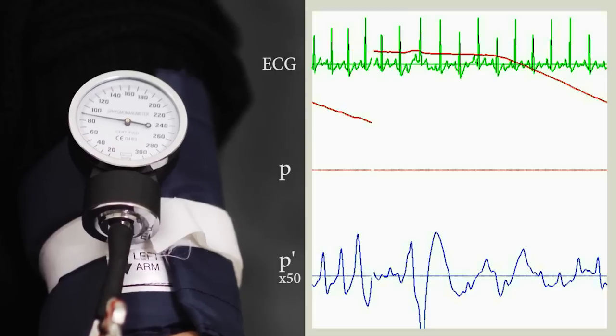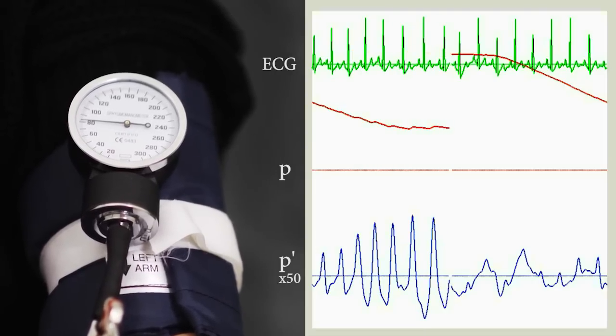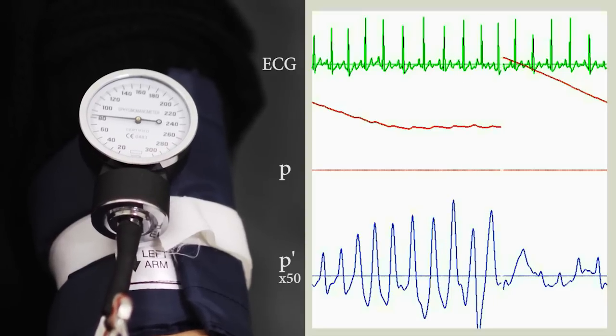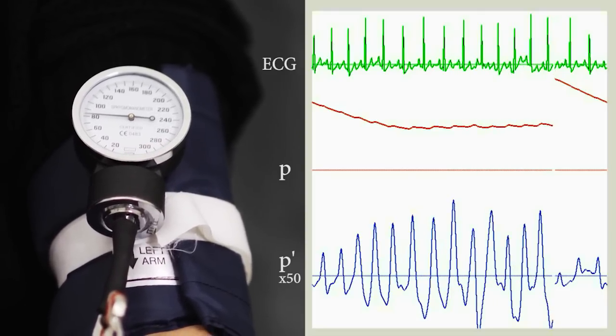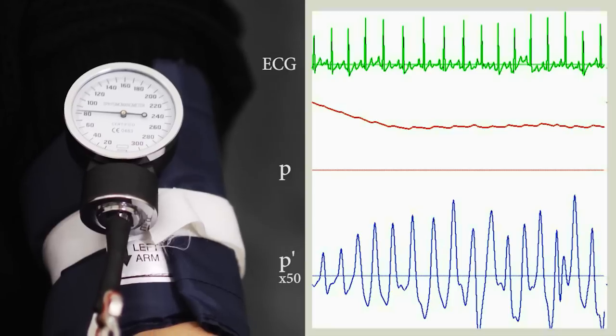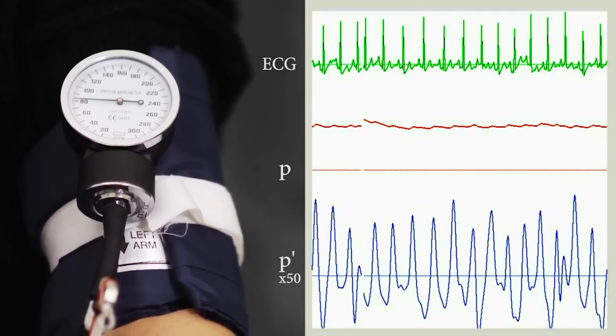Notice now the small pressure changes in the lower trace. This happens because at every heartbeat a small amount of blood passes through my artery which in turn impinges onto the cuff and is registered by the pressure sensor.